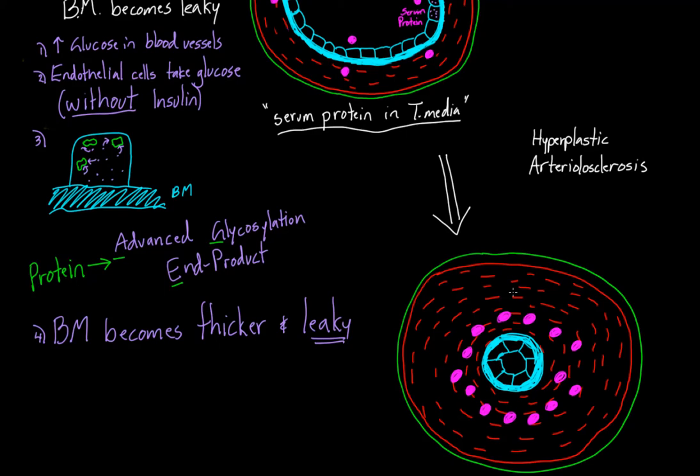Under a microscope, people describe this as looking like an onion. They call this onion skinning, meaning that the onion has many layers to it. This actually looks like the many layers of an onion. The proliferated smooth muscle layer, the tunica media, is now very thick.